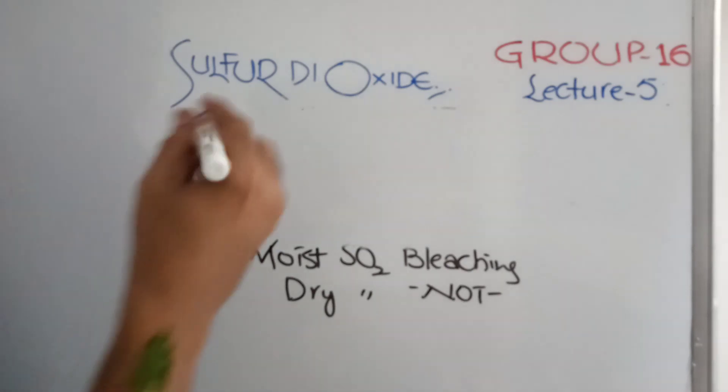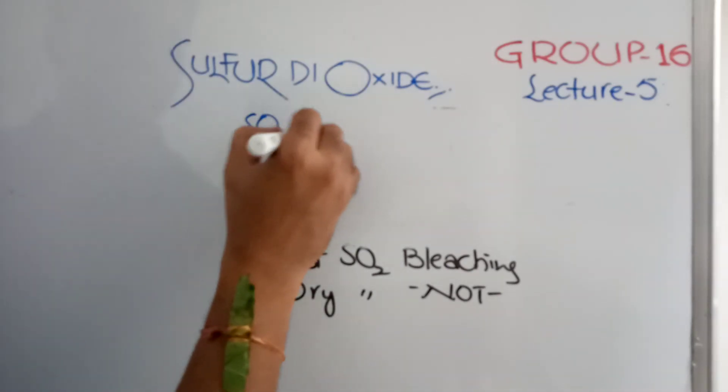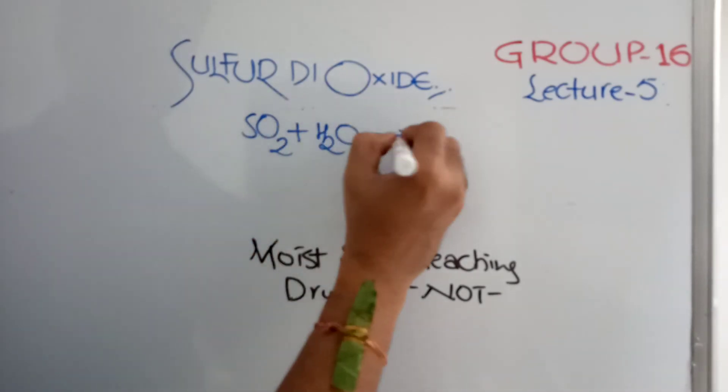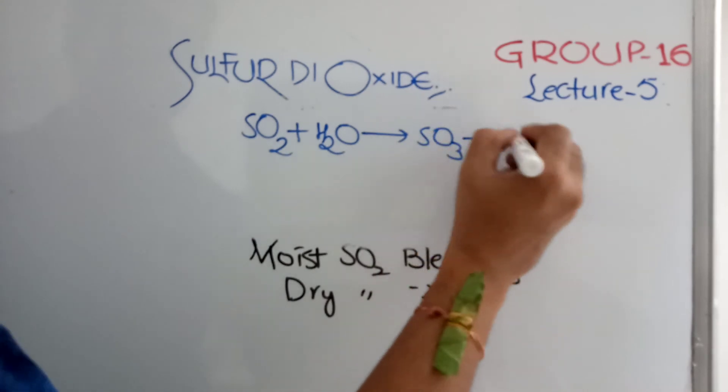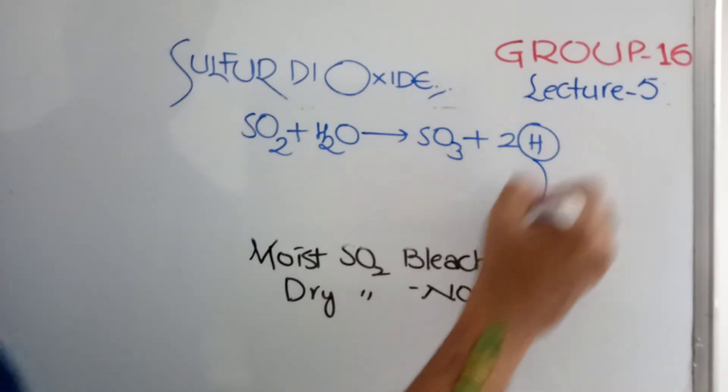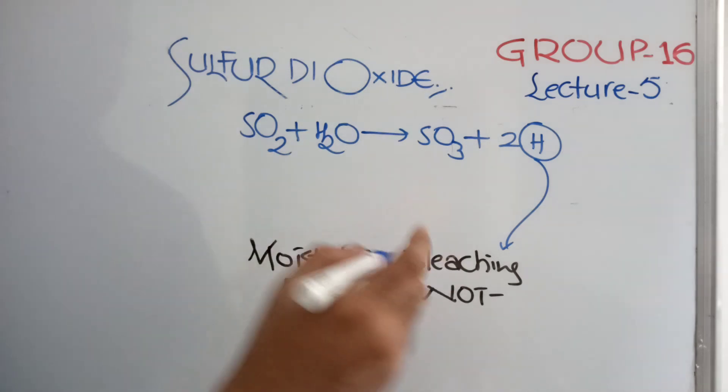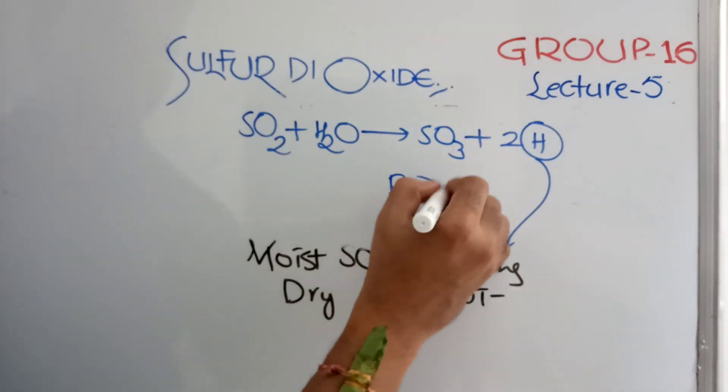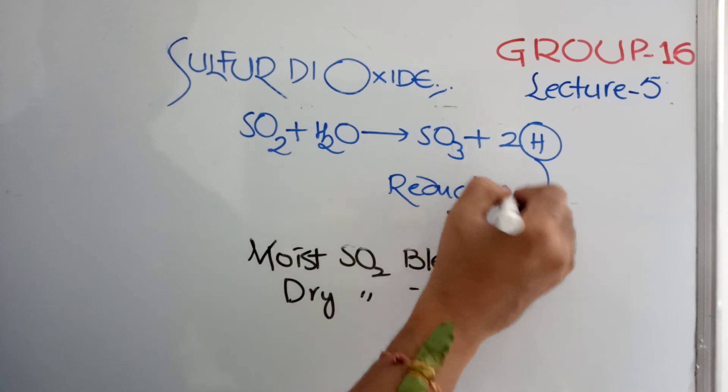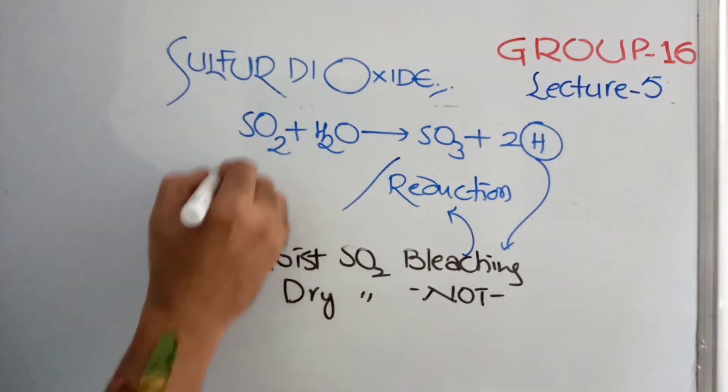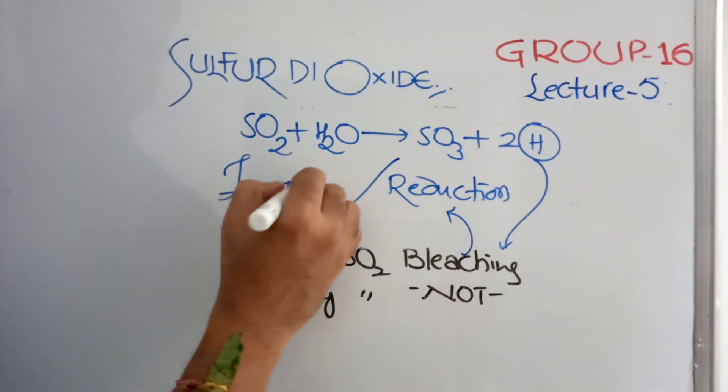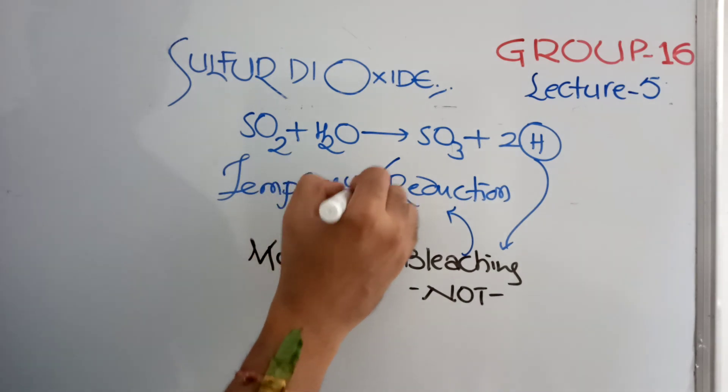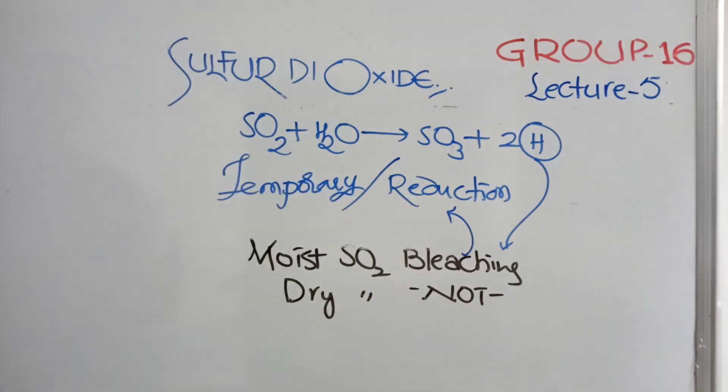What happens in moist means? It reacts with water to form SO3 and releases two hydrogens. Because of these hydrogens, it is going to be a bleaching agent. Generally, bleaching is done by oxidation. But sulfur dioxide is special. So, the bleaching is by reduction. And another speciality is, it is temporary reduction. Generally, reduction will be permanent. But this is temporary. Generally, bleaching will be oxidation. This is reduction.